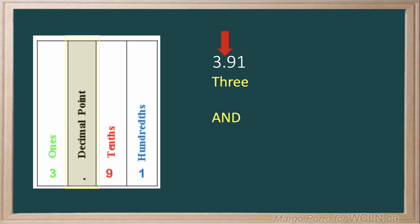Next, we look at the numbers after the decimal and read them just like we would a whole number. In this case, ninety-one. And finally, we give the value of the last digit. This number has two digits after the decimal, so the value of the last digit is hundredths. Put it all together and you have three and ninety-one hundredths.